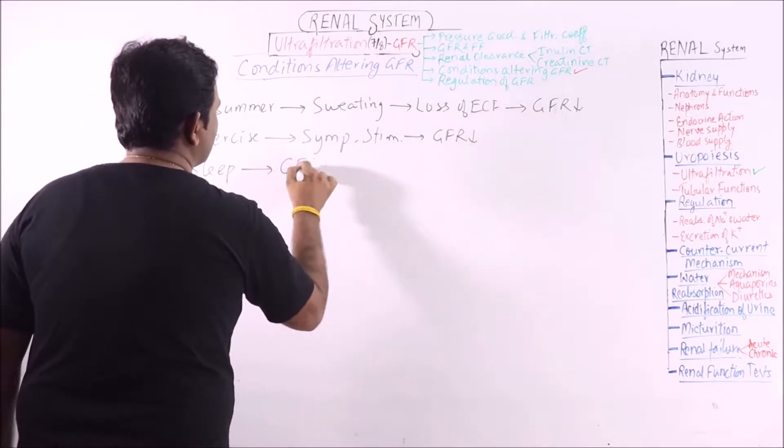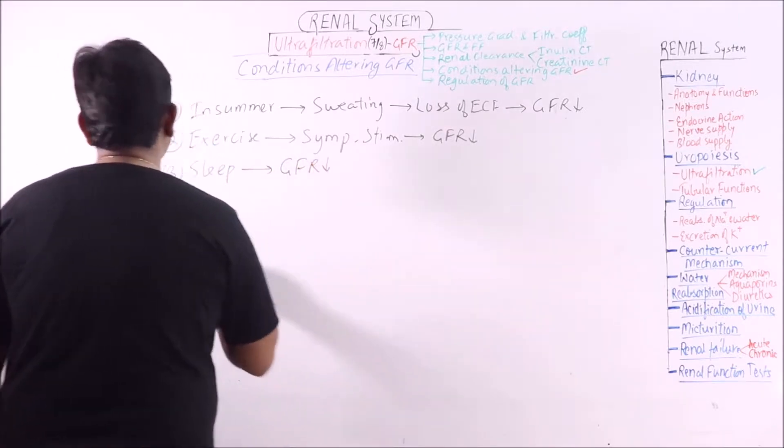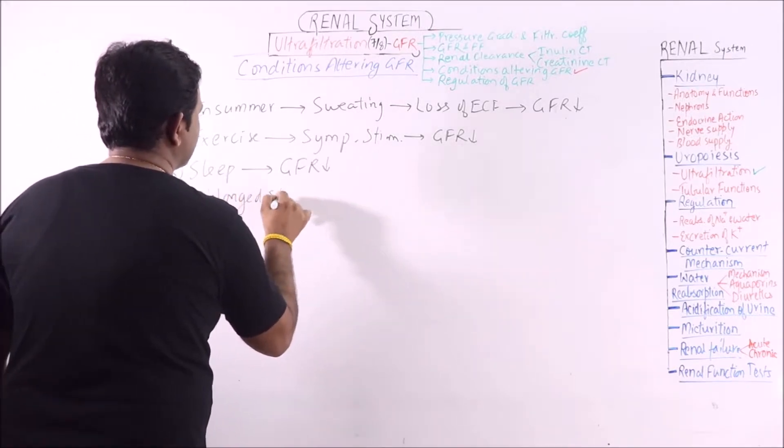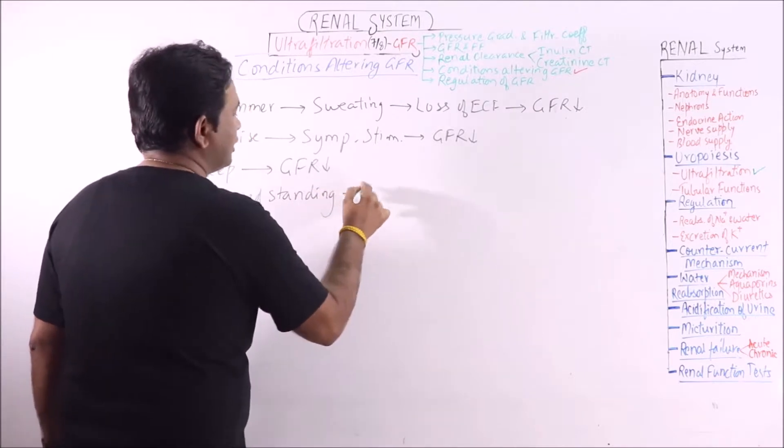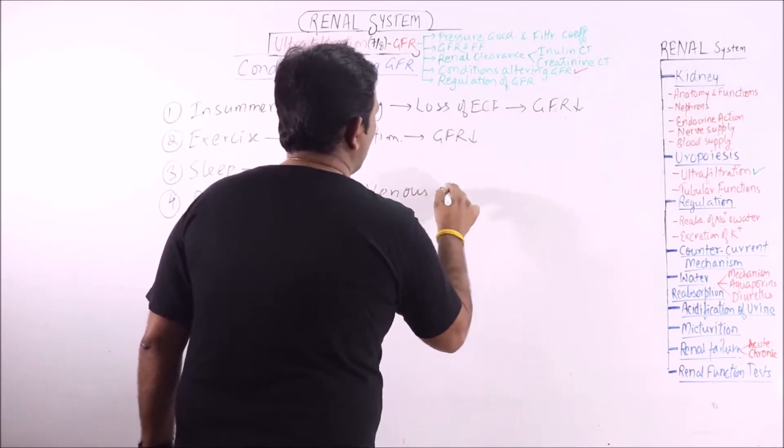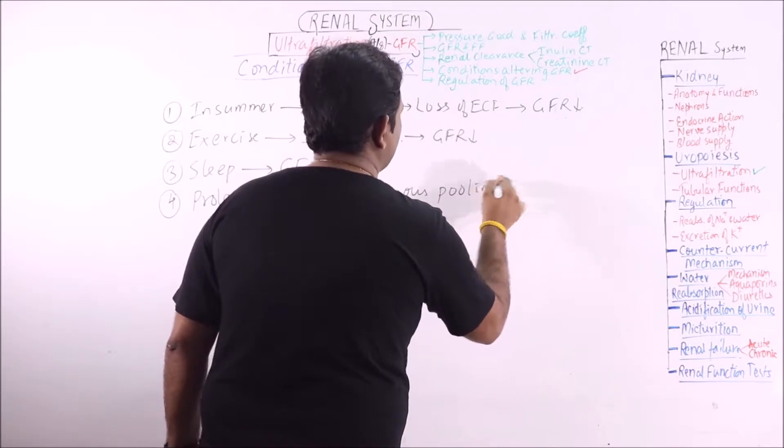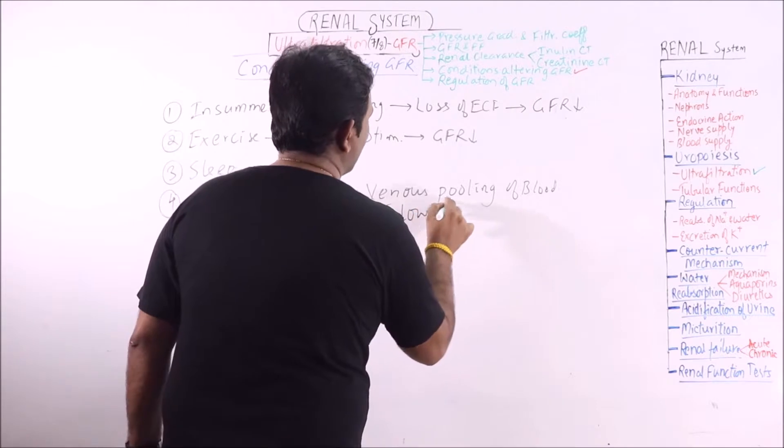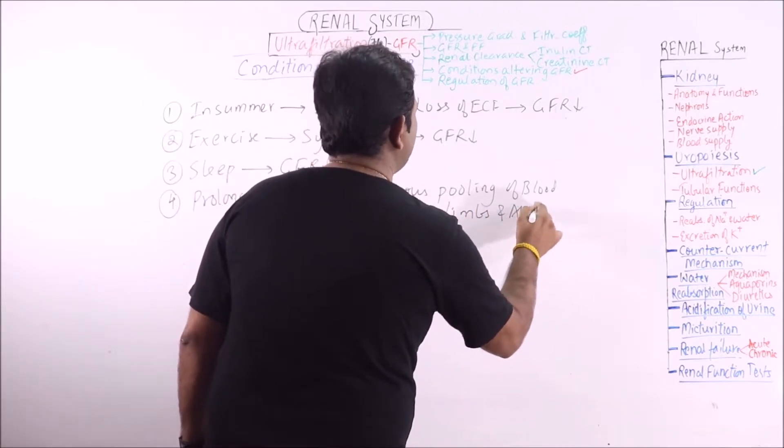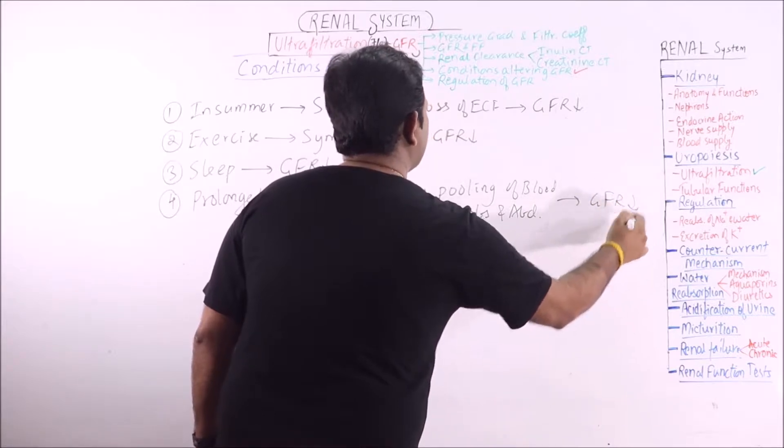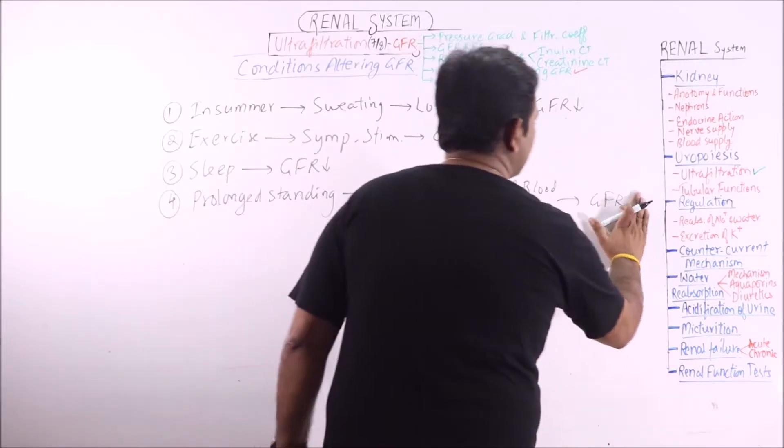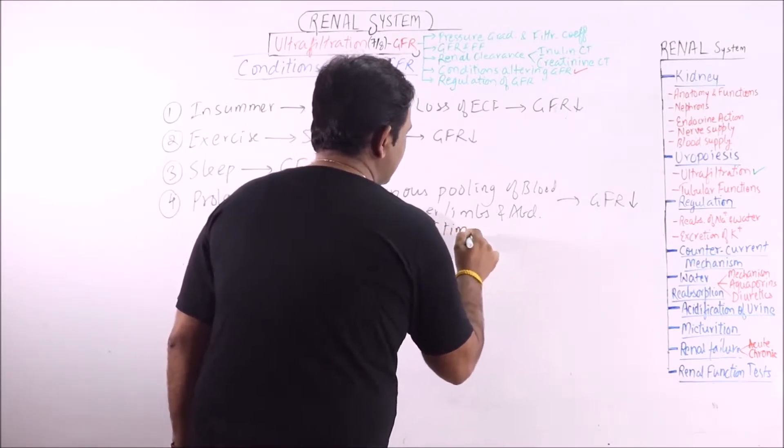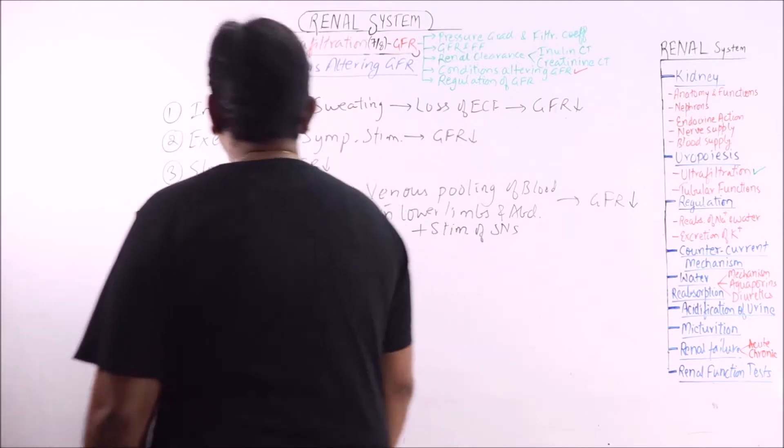Sleep also decreases GFR. Prolonged standing leads to venous pooling of blood in lower limbs and abdomen, finally decreasing GFR. Sympathetic stimulation also occurs in this condition.